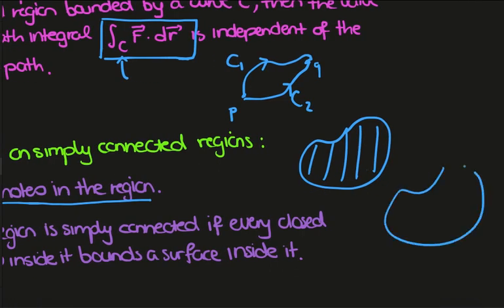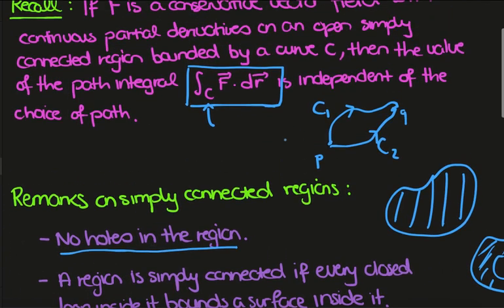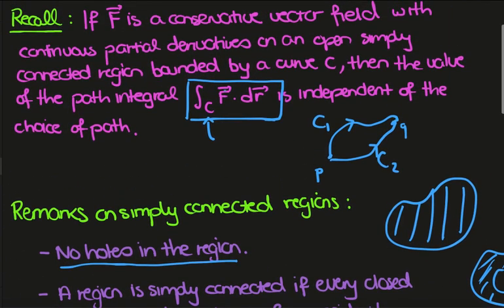But something like this, where there is a hole, is an example of a region which is not simply connected. So this is really fundamental to this theorem here, and what we want to do in this video is relate path independence to the recent theorem that we've learned, which is Stokes' theorem.